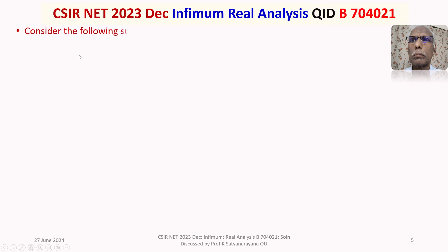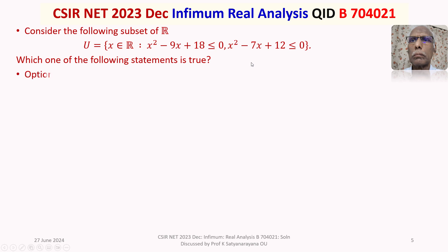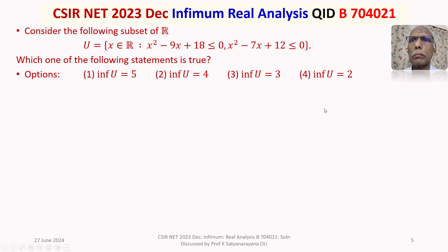The given question is: consider the following subset of the set of real numbers R. U is equal to the set of x belonging to R satisfying x² - 9x + 18 ≤ 0 and x² - 7x + 12 ≤ 0. Which one of the following statements is true? We are given four options for the infimum of U: 5, 4, 3, or 2.